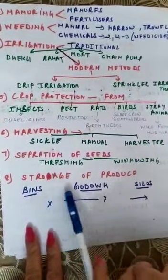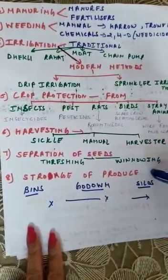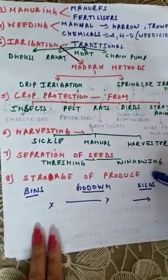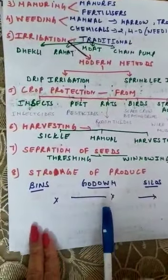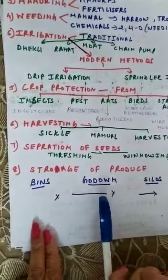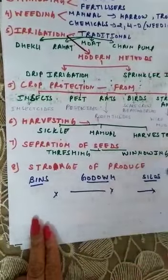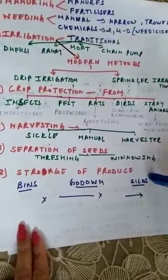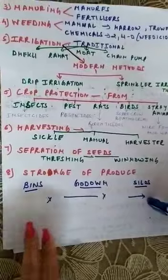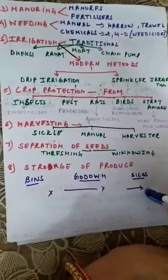The last practice is storage of the produce. The produce should be stored very carefully — it is stored in bins or in godowns using sacks, and in large containers known as silos. So these are all the practices a farmer has to perform before sowing and after harvesting. This finishes our first chapter. Thank you.